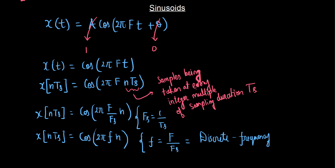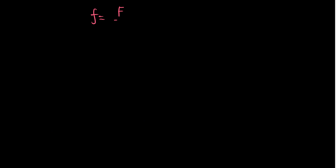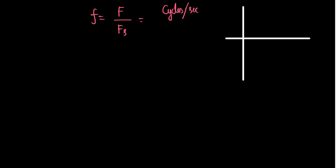Let's look at small f in more detail. Small f equals capital F divided by Fs. Capital F is the actual frequency of the signal — it indicates how many cycles there are in one second. For example, if we draw a signal where one full cycle fits within one second, that means capital F is one cycle per second.